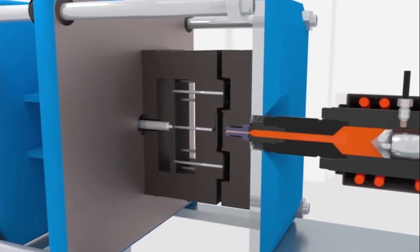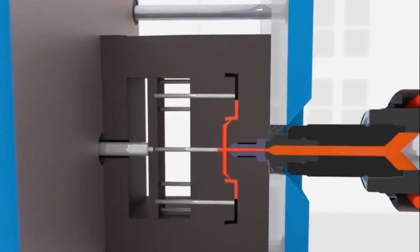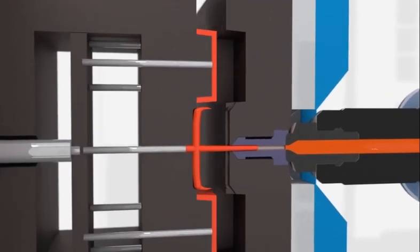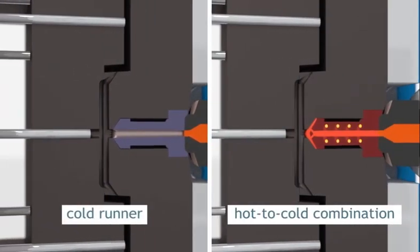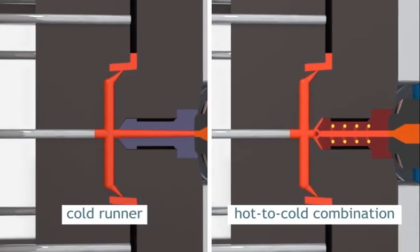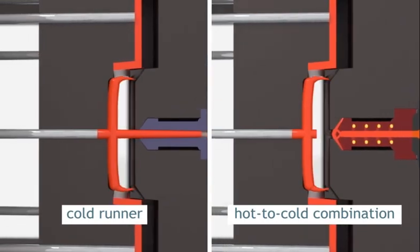Generally, sub-gates are used in combination with cold-runner systems that are placed in the main parting line of two-plate molds. Both conventional all-cold-runner systems and hot-to-cold combination designs are options with sub-gates.